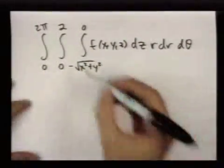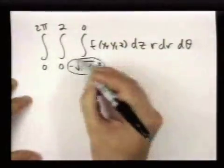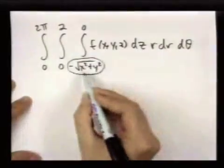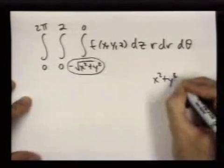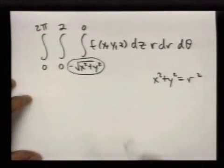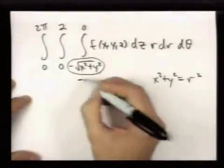And this is nice because this bound now can be written very easily in polar coordinates because x² + y² in polar coordinates is r². So the square root of that is just r, so this is -r.